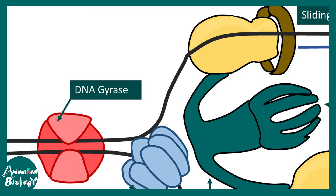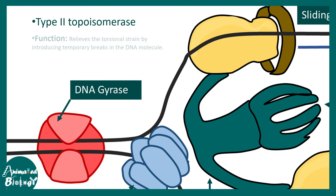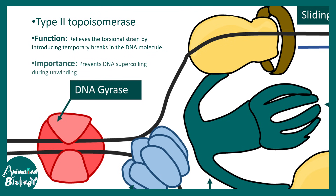Let's talk about DNA gyrase. DNA gyrase is a topoisomerase type 2. Its function is to relieve the torsional strain introduced during the replication process. It breaks the DNA molecule to relieve that torsional strain and thereby prevents DNA supercoiling during the unwinding process.